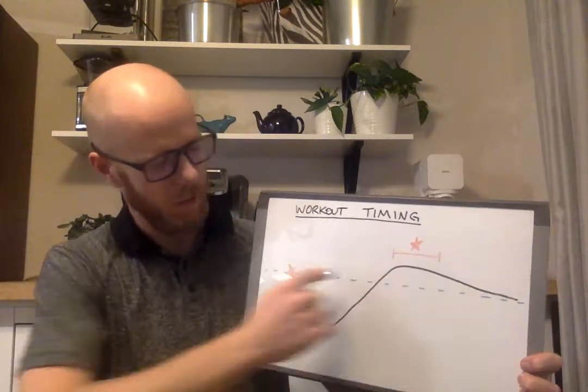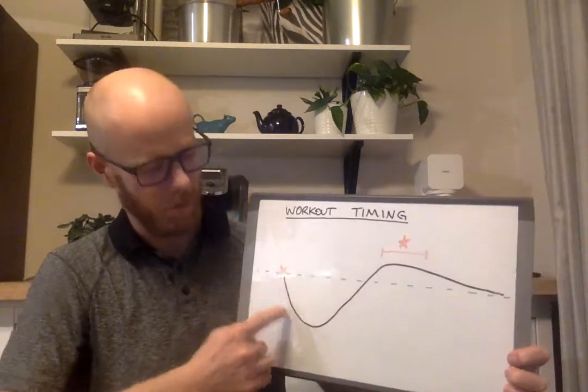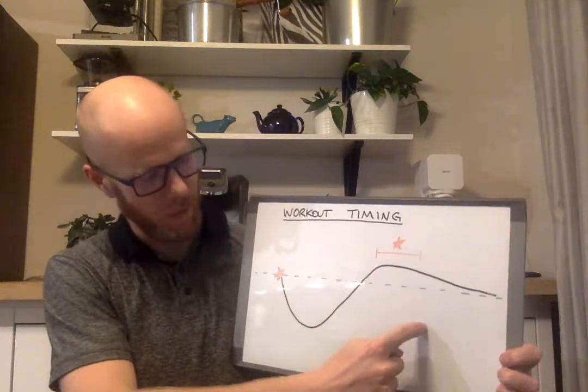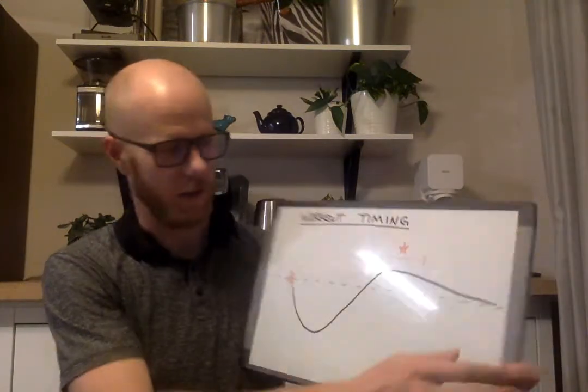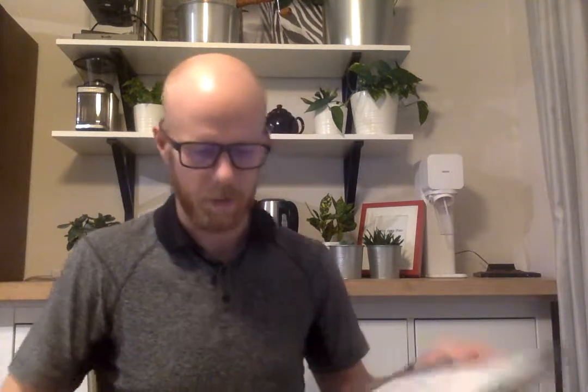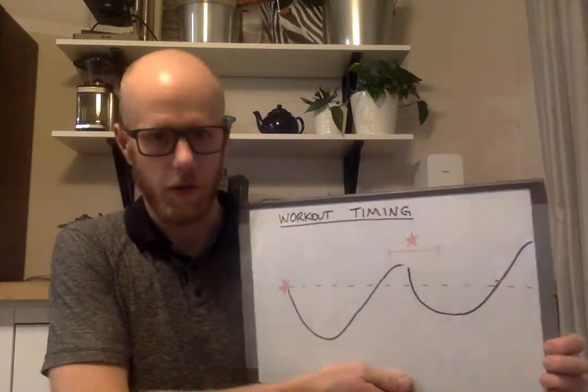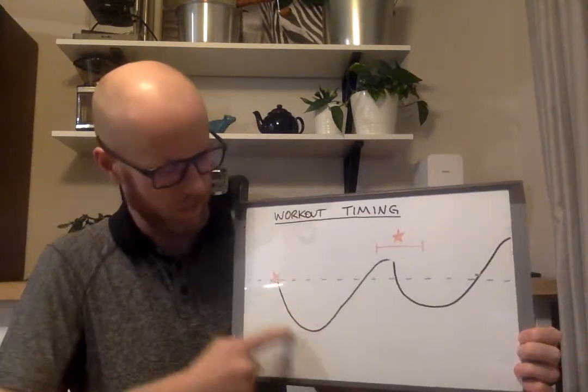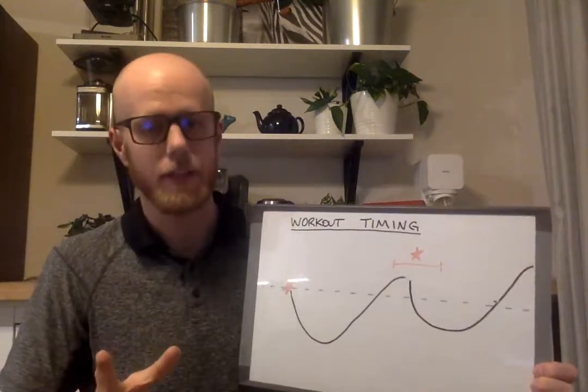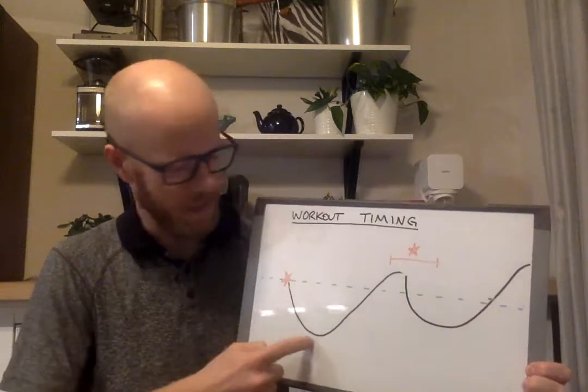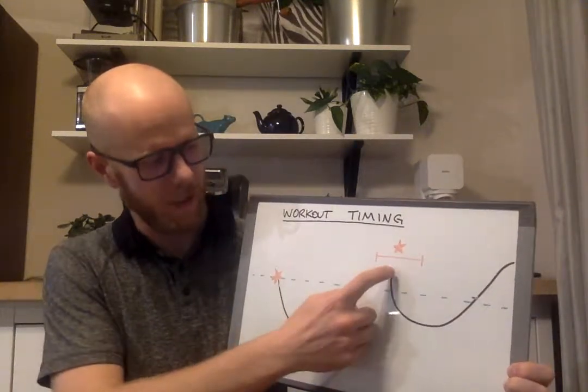So basically we would start from here, we would do this same cycle again where we're going down but it wouldn't go down quite as far, it's going to be down somewhere in here. So if I was to draw that second workout on and take out the other one it would end up working something like this. So we've injured our body, beat it down, we've started to come back, we've super compensated,